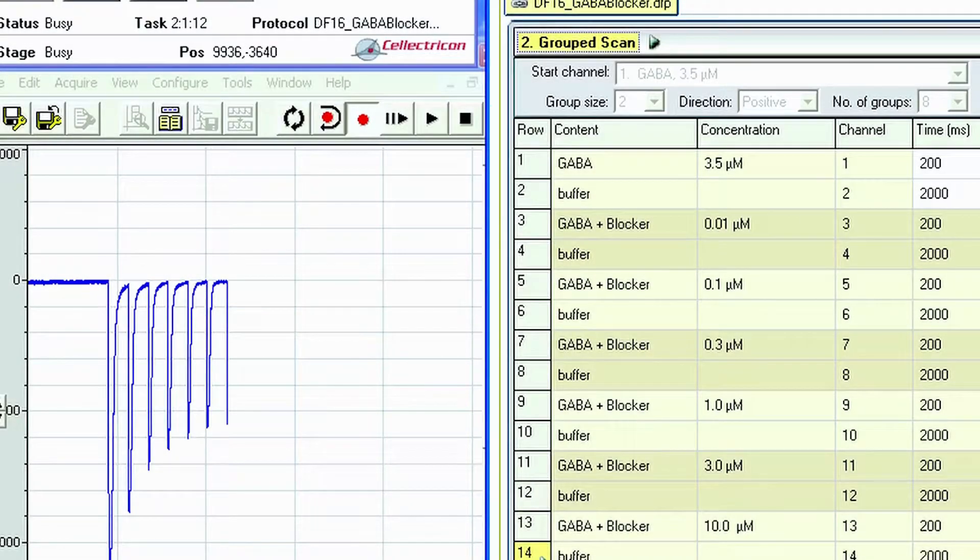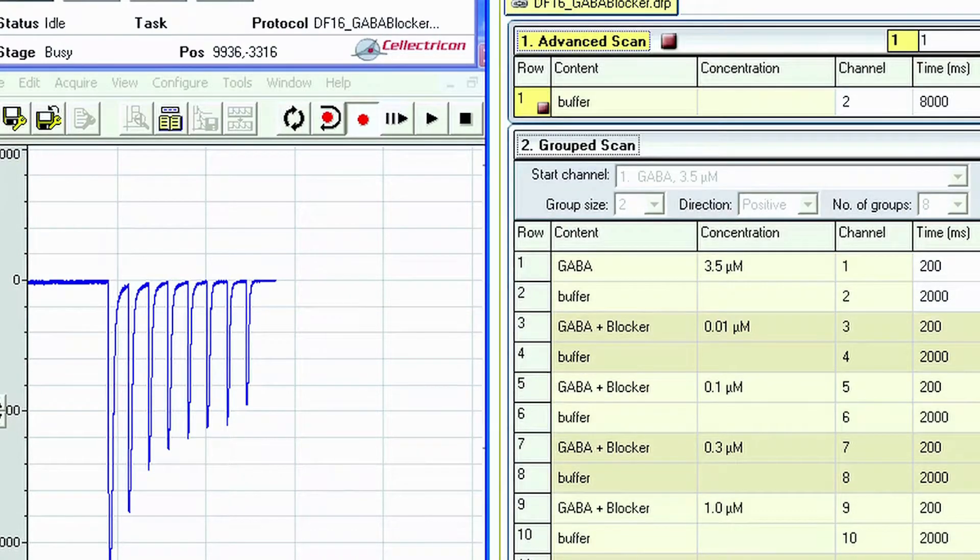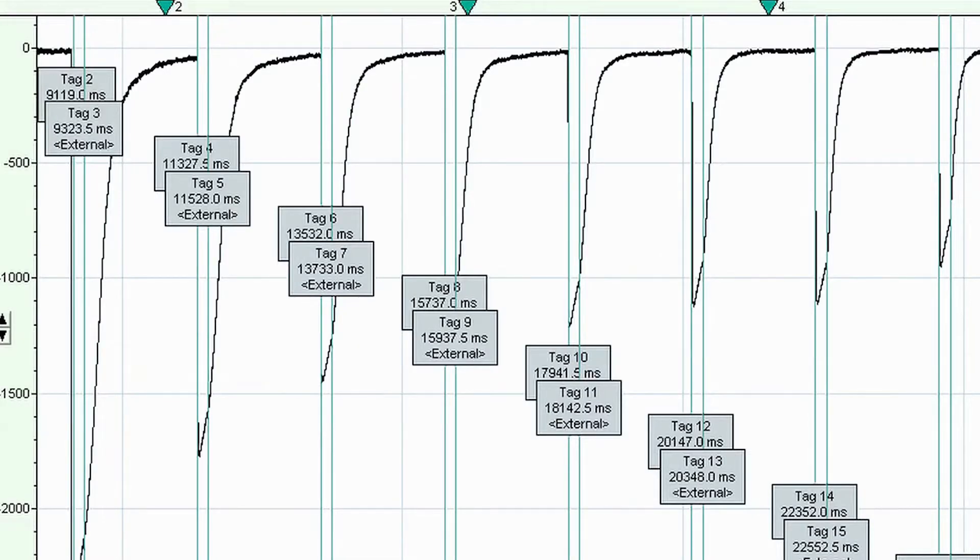The start of the recording is synchronized by a start trigger from the Dynaflow Commander software to the patch clamp software. Channel triggers can also be recorded to mark the exact timing of solution application together with the current responses.